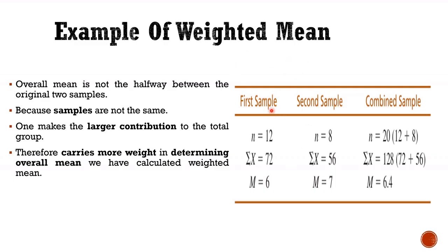Here is an example of weighted mean. There are two samples and a combined sample. The first sample n is 12, sum of x is 72, mean is 6. In the second sample, n is 8, sum of x is 56, mean is 7. For the combined sample, n1 plus n2 is 20, sum of x1 plus sum of x2 is 128, the mean comes to 6.4. We can observe that overall mean is not halfway between the original two samples. Because samples are not the same, the larger distribution will make a larger contribution and therefore carries more weight in determining the overall mean, that is the weighted mean.